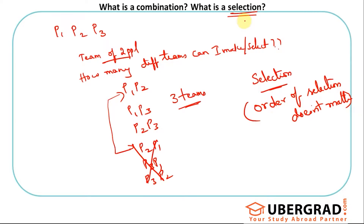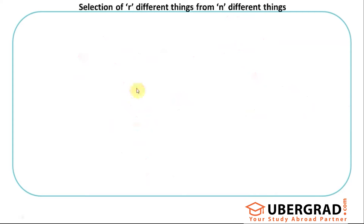Permutations is like an arrangement where the order also matters — P1-P2 is different from P2-P1 — but we'll get to that in the next video. For combinations, it's about selecting people from a big pool, forming teams, making committees, etc. Those are the standard scenarios where the order of selection does not matter, and that's when you use combination.